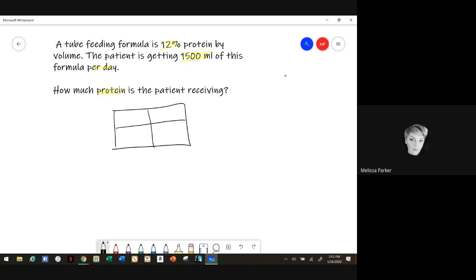So that kind of helps you to figure out what you're solving for. So we'll go ahead and use our little box. We know that 100% is going to be 1500, and then 12% this is mls, we don't know how much that's going to be. So I'm going to multiply.